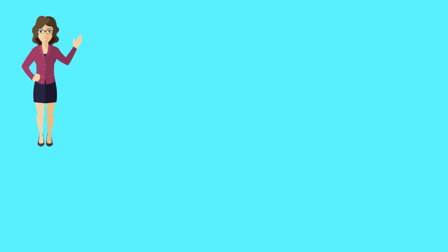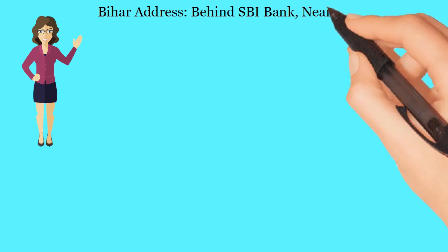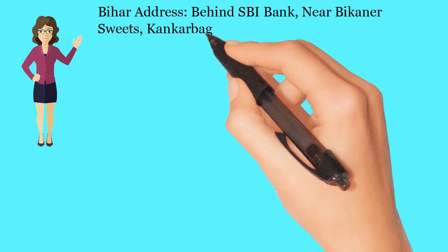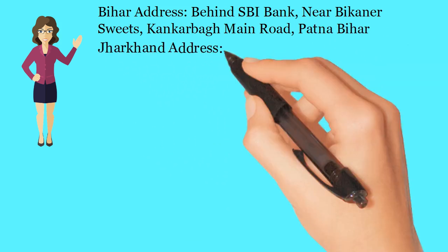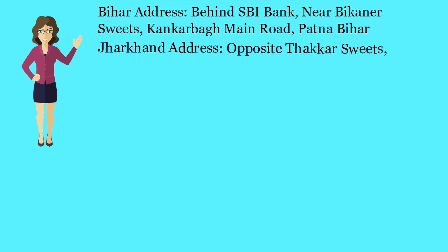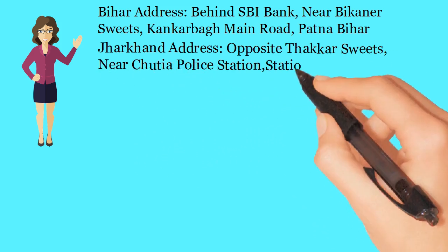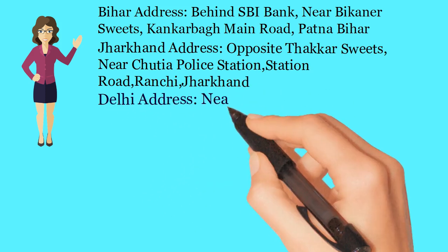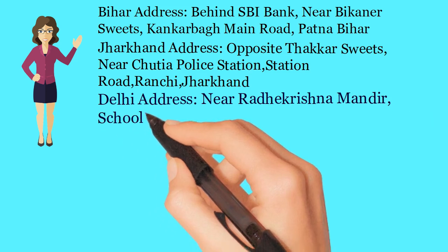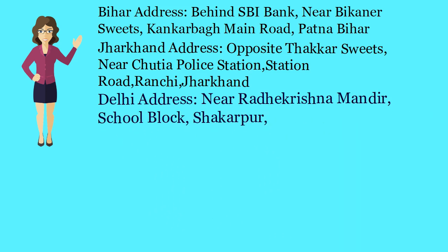If you want to get any type of FSSAI Food License, you can contact us at the following addresses. Bihar Address: Behind SBI Bank, Near Bikhana Suites, Kangk Harbor Main Road, Patna, Bihar. Jharkhand Address: Opposite Thakur Suites, Near Chudiapala Station, Station Road, Ranchi, Jharkhand. Delhi Address: Near Radhae Krishna Mandia, School Block, Chakapa, Laxminagar, New Delhi, India.